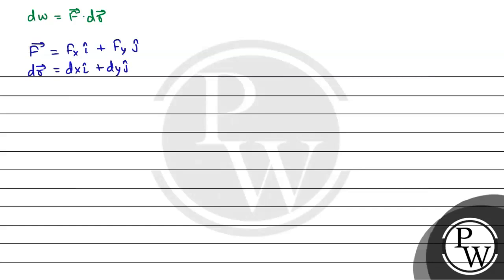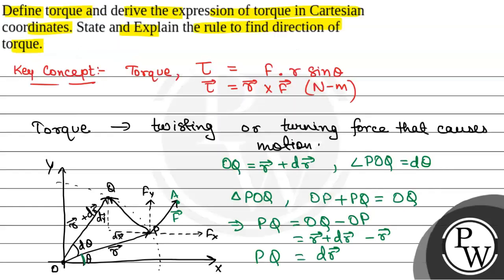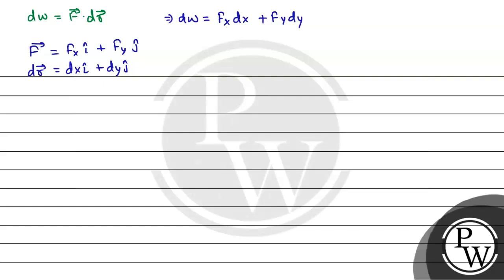So we will have dw equals fx dx, because dot product applies, fx dx plus fy dy. This will be the dw. The coordinates of point P, if we see, x will be r cos theta and y equals r sin theta.